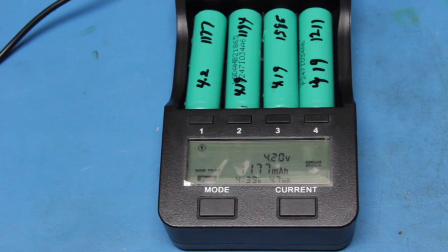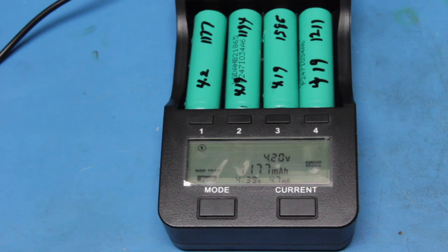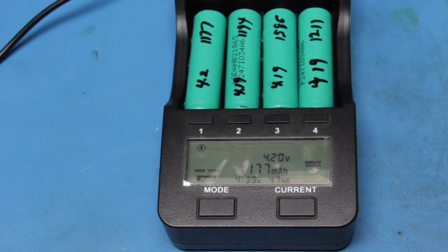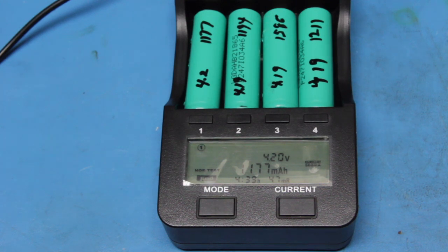It's now the next morning. All of the batteries have been charged, discharged, and then recharged again. Let's go through and check. The first battery is 4.20 volts, 1177 milliamp-hours. I've checked the specs on these batteries and they're 1500 milliamp-hours. That's the first battery.